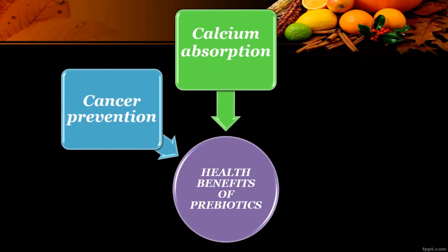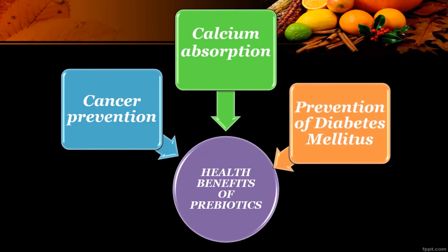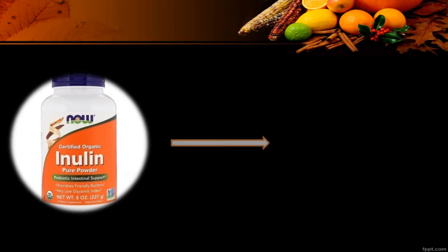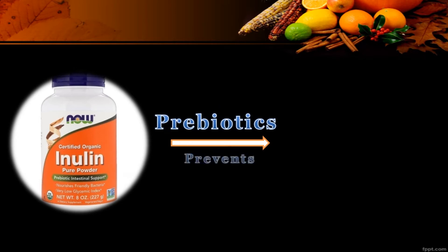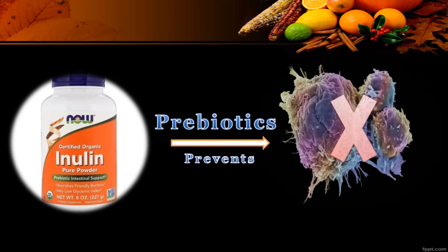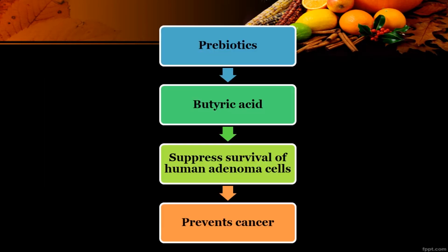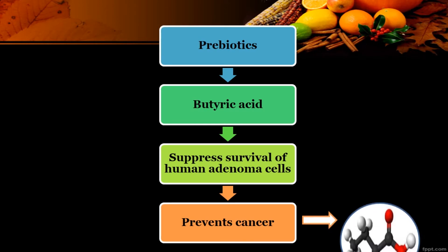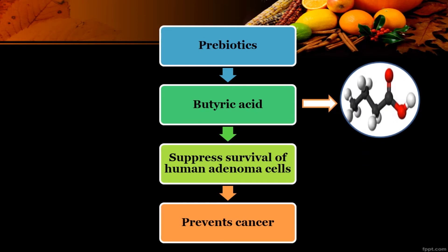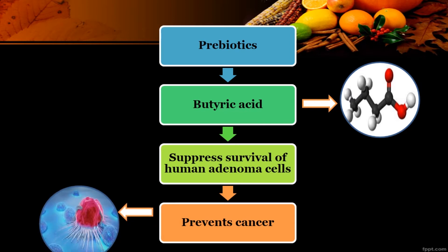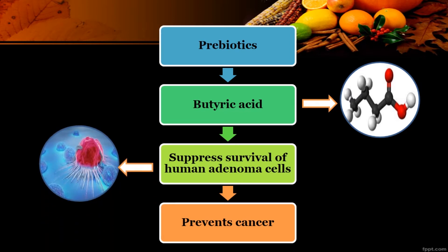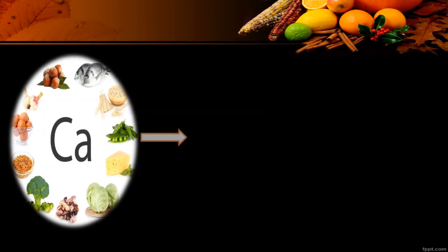Prebiotics are considered to be more effective in preventing cancer. Inulin, an important component of prebiotics, has several properties in preventing cancer. Prebiotic fiber produces a surplus amount of butyric acid in the gut, which suppresses the survival of human colon adenoma cells.